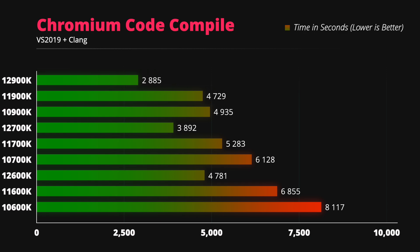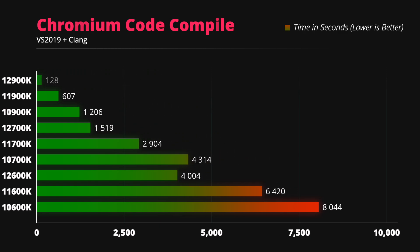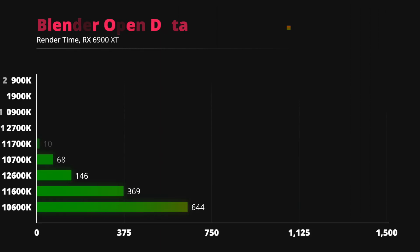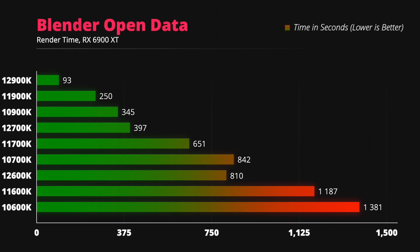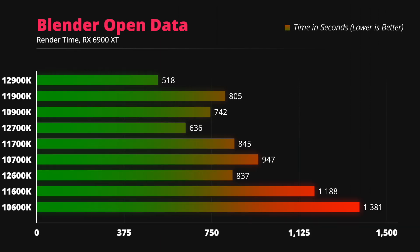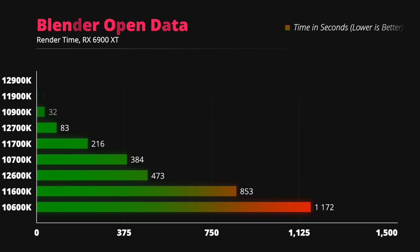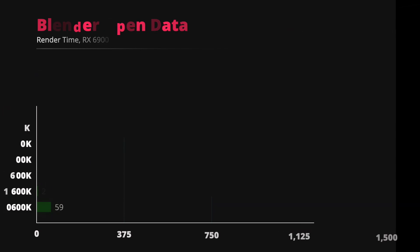The i7-12700K is a level up — it is 3 to 30% better than the 12600K depending on the app. The i9-12900K is in a league of its own, being 5 to 20% better than the 12700K.